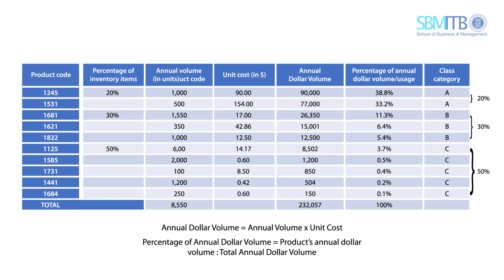We also define the class category based on the cumulative percentage of annual dollar volume. Since class A consists of 2 products, the cumulative percentage of annual dollar volume for class A is 72%. Class B consists of 3 products with 23% of cumulative percentage, and class C consists of 5 products with 5% of cumulative percentage of annual dollar volume.